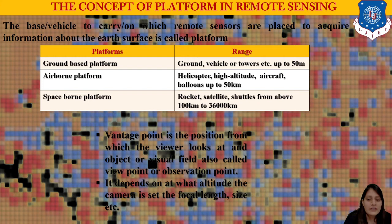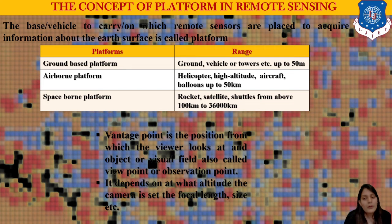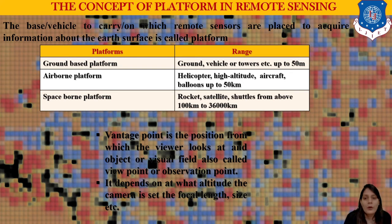There are three more important definitions. Vantage point is the position from which a viewer looks at an object or visualizes a field, also called viewpoint or observation point. It depends on the altitude at which the camera is set, focal length, and size. Vantage point is the observation point from where the viewer looks at the object — basically, the sensor's position from where it starts sensing the object.